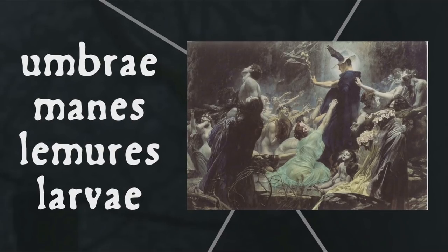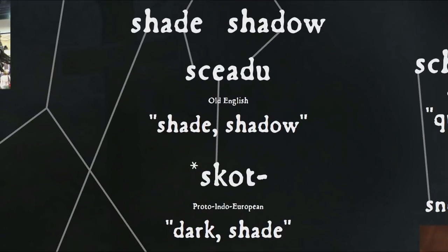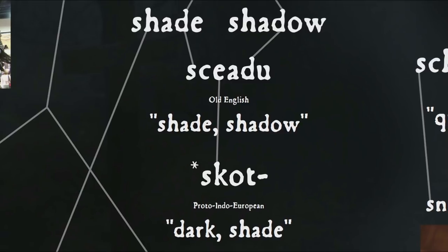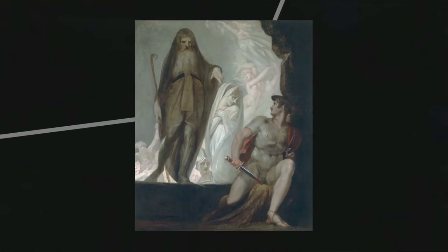In Latin, spirits of the dead were referred to by such words as umbrae, manes, lemures, and larvae, and these words make it into English at least in a limited way, particularly when referring to or translating classical Latin texts. Umbrae was literally translated into English as shades, a word that comes into English through the Germanic root and is related to shadow. The Greco-Roman underworld was said to be filled with dim shades of the dead who could sometimes return, as seen for instance in some famous scenes in Homer's Odyssey.